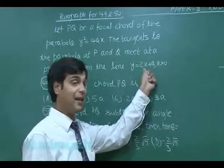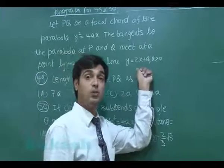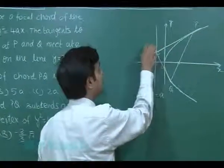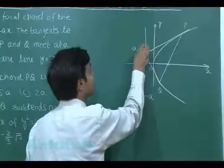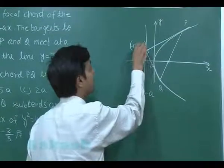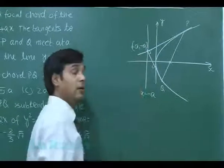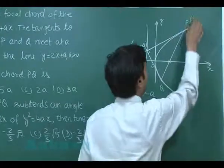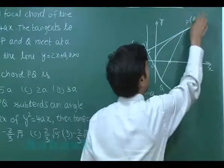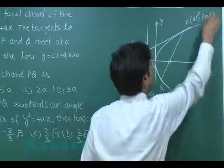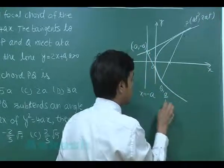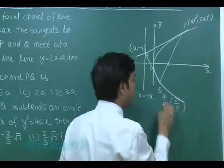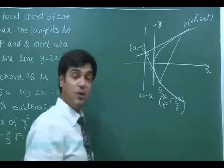This means the point of intersection comes out as (-a, -a). Since we are talking about a focal chord, the parametric coordinates of the endpoints are (at², 2at) and (a/t², -2a/t), because for a focal chord t₁·t₂ = -1.